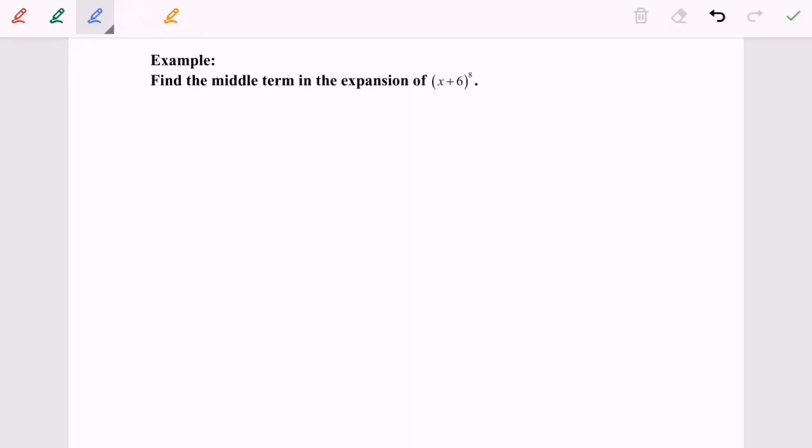Hi everyone, so today I'm going to discuss the example for the binomial expansion where n is a positive integer. Find the middle terms in the expansion of x plus 6 to the power of 8.